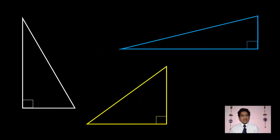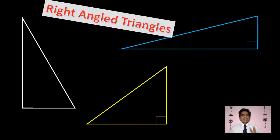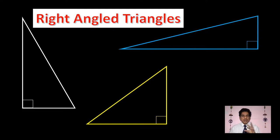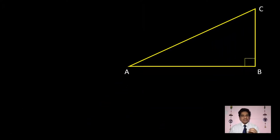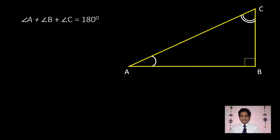These are all actually right angle triangles. We start with trigonometry using right angle triangles because the fundamental concepts are all related to right angle triangles. Here I have taken a right angle triangle ABC, where the right angle is at B. We already know that the sum of three angles in a triangle is always equal to 180 degrees, so angle B is 90 degrees.